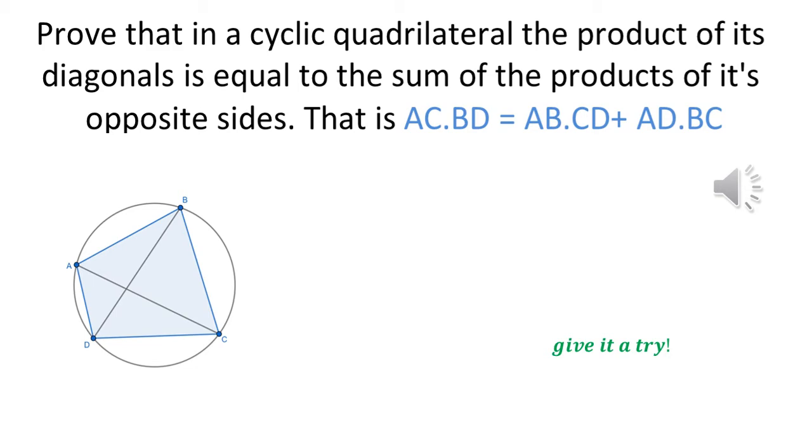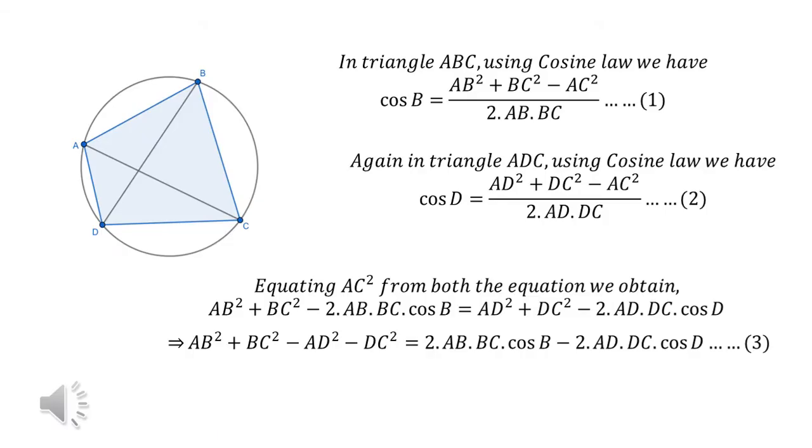Let's start solving the problem. At first, we will use the law of cosines in the triangle ABC and ADC. Thereafter we have equated the value of AC square from both the equations to obtain AB square plus BC square minus AD square minus DC square equals 2 times AB times BC times cos B minus 2 times AD times DC times cos D.